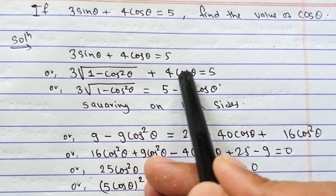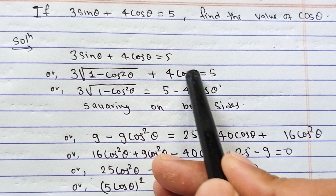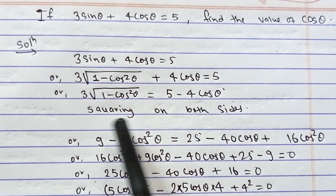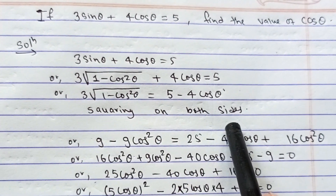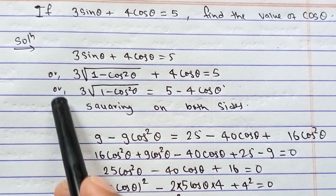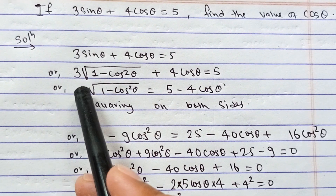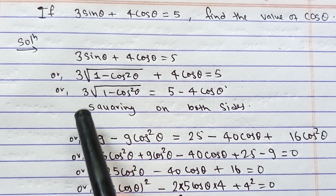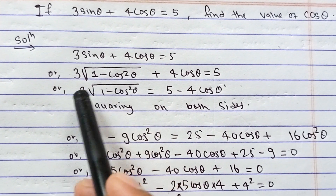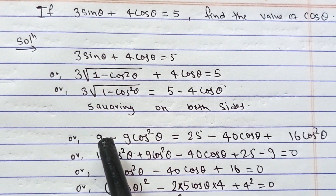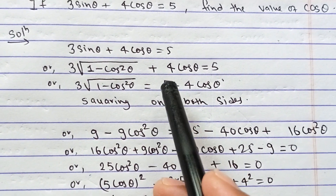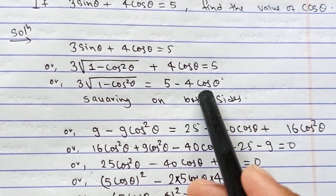The 4 cos θ is transposed to this side and we square both sides. After squaring, the square of 3 is 9, so after opening the bracket, 9 multiplies into both terms: 9×1 = 9, and 9×cos²θ. On the right side we have (5 - 4 cos θ) squared.